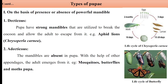Then coming to the types of pupae — first classification is based on the presence or absence of functional mandibles. First is Decticous type of pupae — they have well-developed, strong mandibles, and the pupae escape or break out of the cocoon with the help of these strong mandibles. This type of pupae is found in case of aphid lions, which have Decticous type of pupae and can break the cocoon with their mandibles. Then second is Adecticous — 'a' means absent, 'decticous' means teeth or mandibles. In this type the mandibles are completely absent, and the adult escapes from the pupae with the help of other appendages or chemicals — for example, in case of mosquitoes and butterflies.